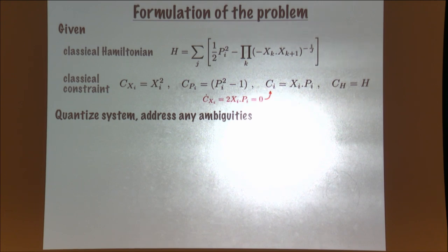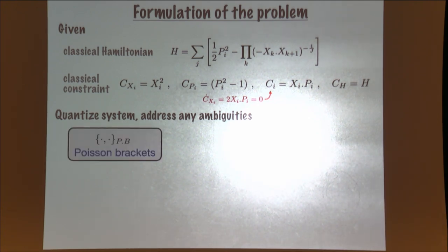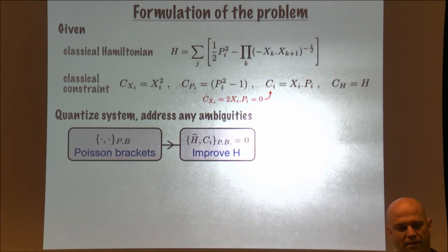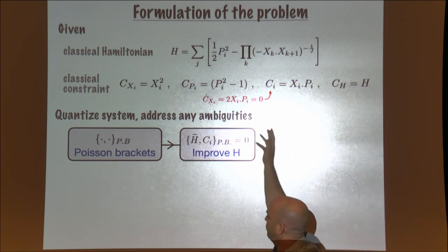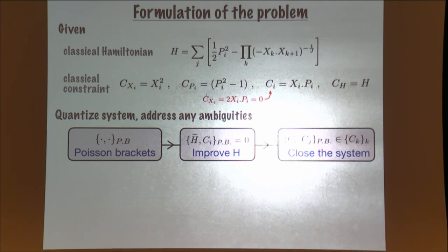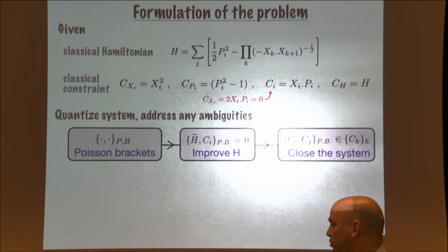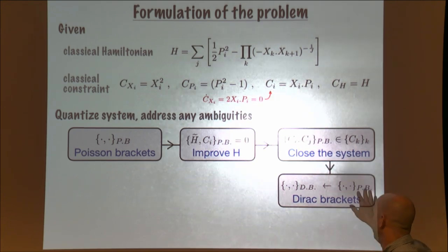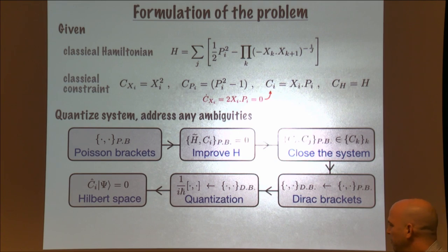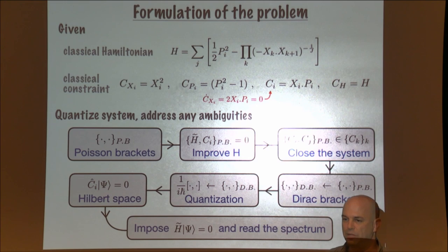Quantizing such a quantum mechanical problem means: first, introducing a Poisson bracket; second, improving the Hamiltonian by adding pieces proportional to constraints so that taking the Poisson bracket with the rest of the constraints does not generate new ones; third, closing the set of constraints — finding some are first order and some are second order. When we have second-order constraints, we introduce Dirac brackets instead of Poisson brackets. Dirac brackets are corrections to the Poisson bracket that put you back on the constraint surface. Then quantization replaces the Dirac bracket by commutators, we impose the constraints on the Hilbert space, impose the quantum Hamiltonian constraint, and read the spectrum.